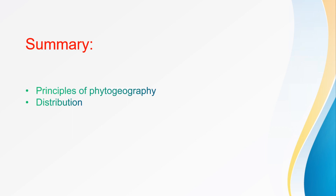Summary: we covered phytogeography and the first principles of phytogeography. Distribution is of three types: continuous, discontinuous, and endemic distribution. Thank you.